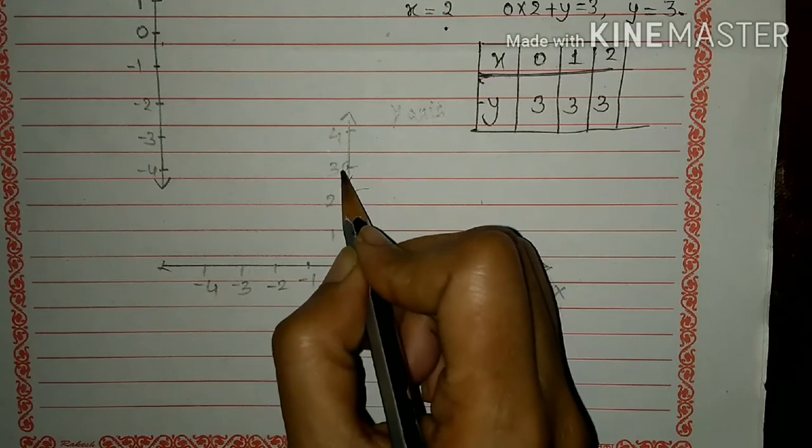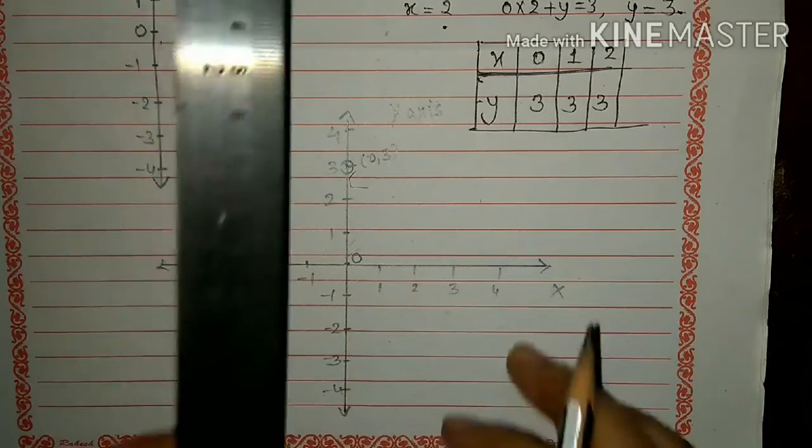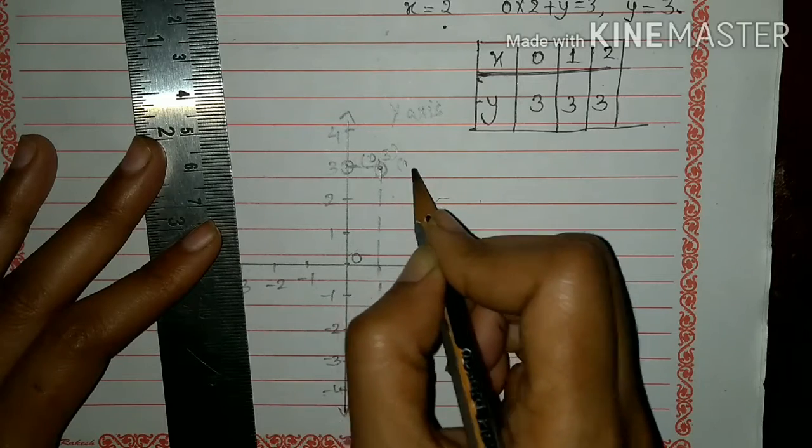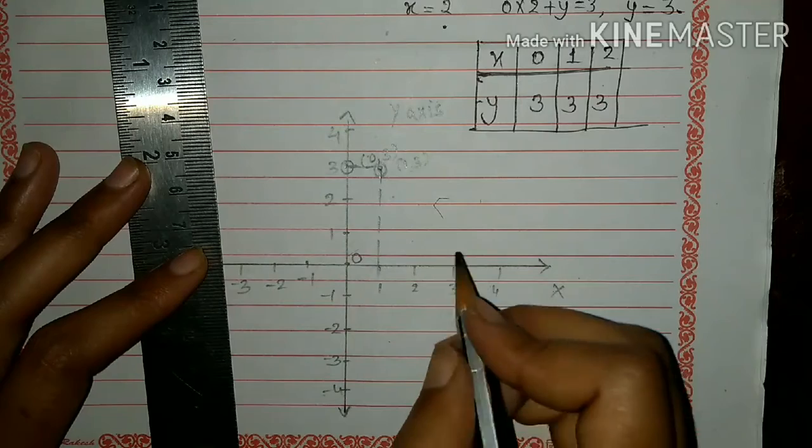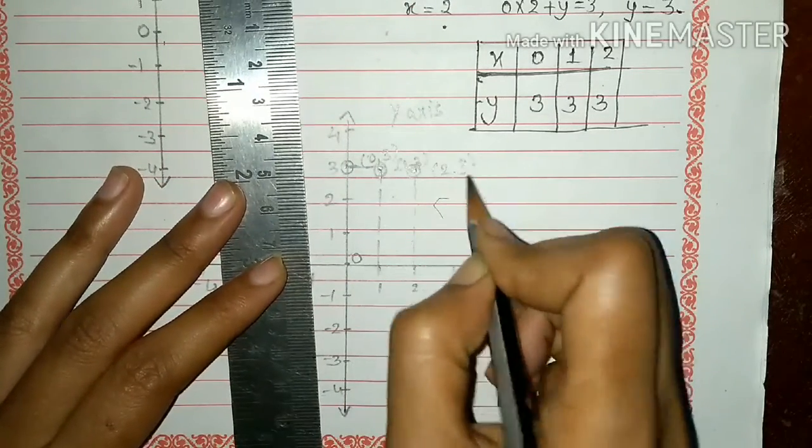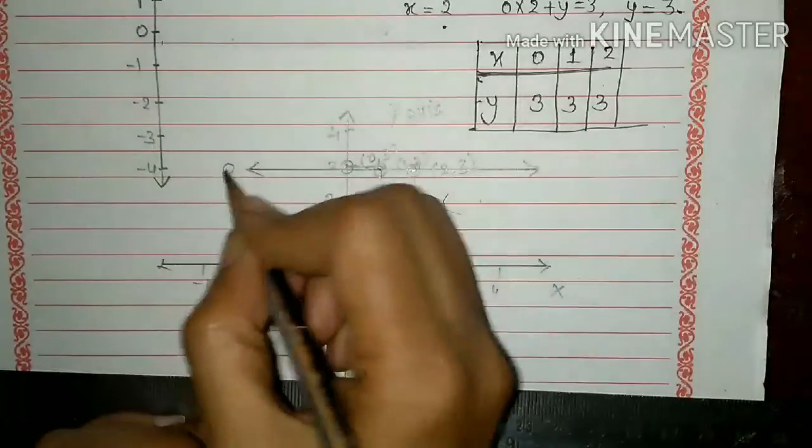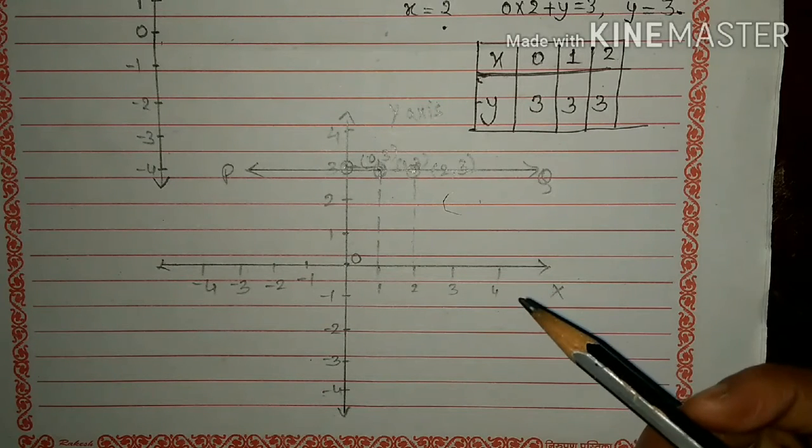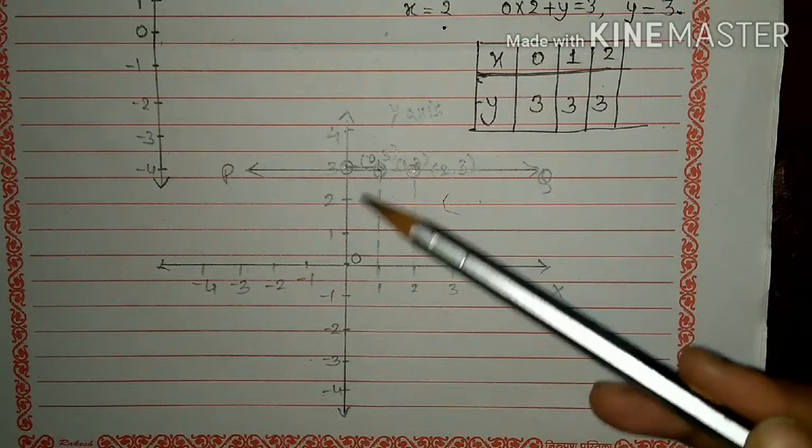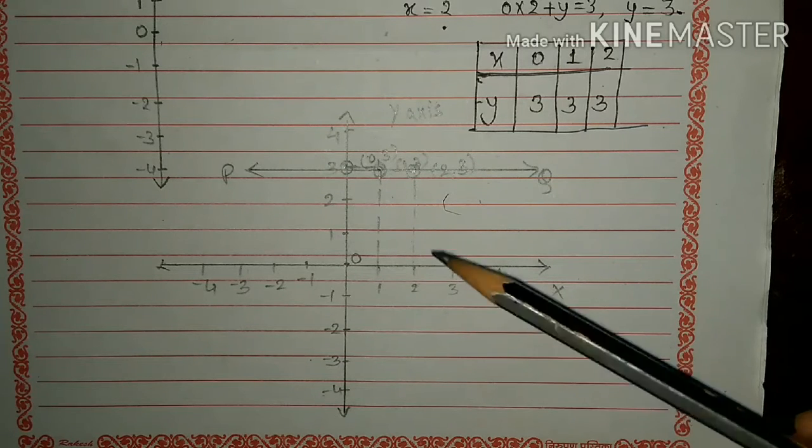Here you see x=0 and y=3, x=1 and y=3, x=2 and y=3. So here you see this is the PQ graph. I already explained that equation of line parallel to the x-axis and y-axis, the graph will be either parallel to x-axis or parallel to y-axis. So here you see this line PQ is parallel to x-axis.